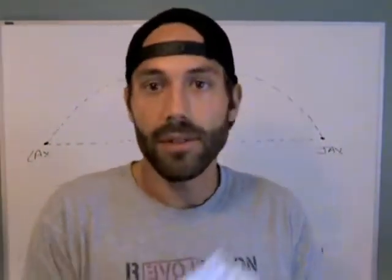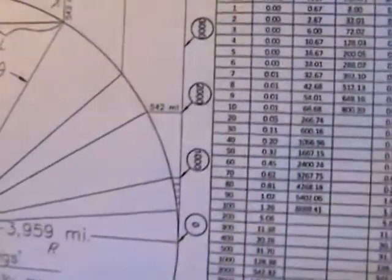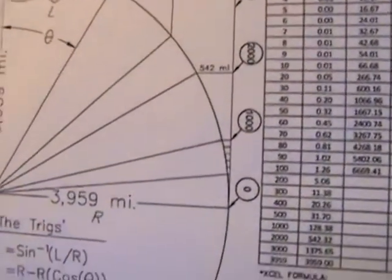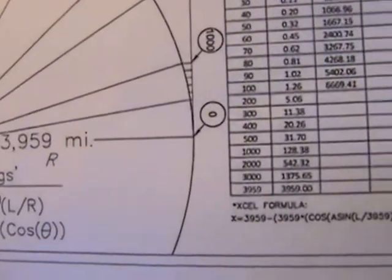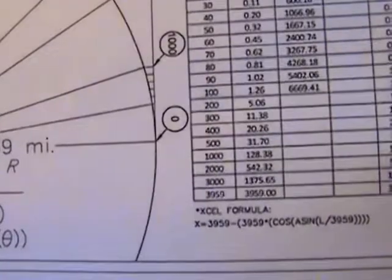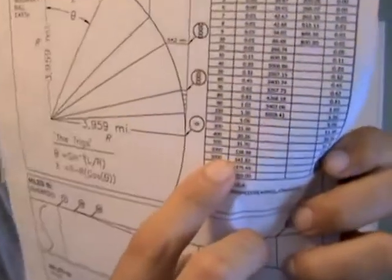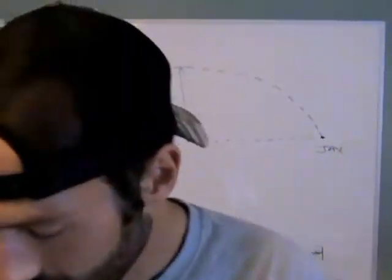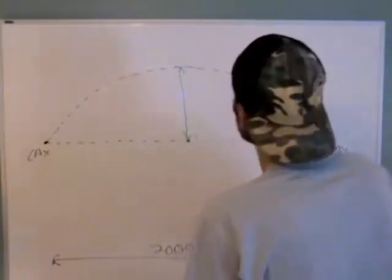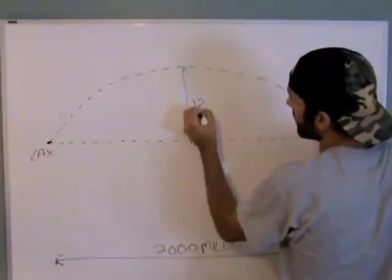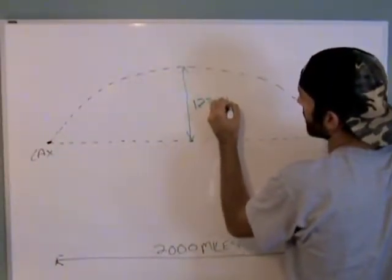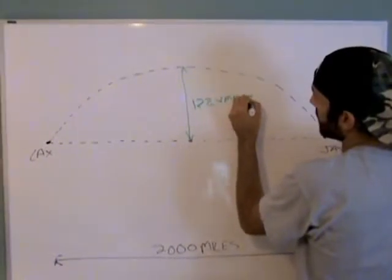Now, you take the curvature chart, you look on here, 1,000 miles, the height of your curve at 1,000 miles should be roughly 100 miles, 128.4 miles. So this distance here is 128.4 miles.